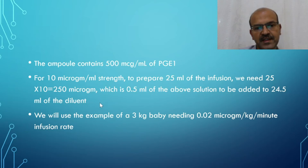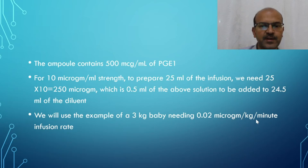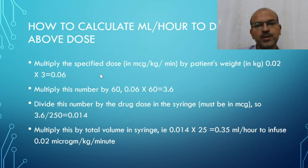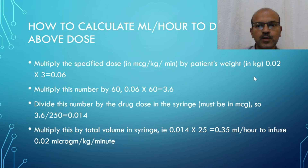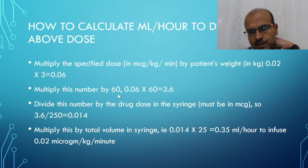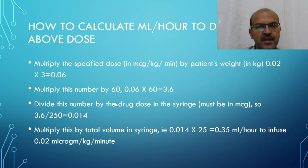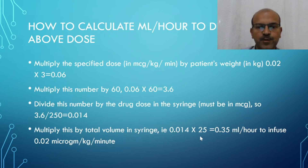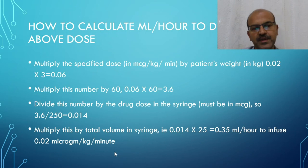For our example, we use a 3 kg baby needing 0.02 microgram per kilogram per minute. We multiply the specified dose by the patient's weight as we did earlier with the morphine infusion: 0.02 times 3 equals 0.06, then multiply by 60 to get the hourly dose — 0.06 times 60 equals 3.6. Divide by the drug dose in the syringe: 3.6 divided by 250 equals 0.014. Multiply by the total volume in the syringe: 0.014 times 25 equals 0.35 ml per hour to achieve 0.02 microgram per kilogram per minute.